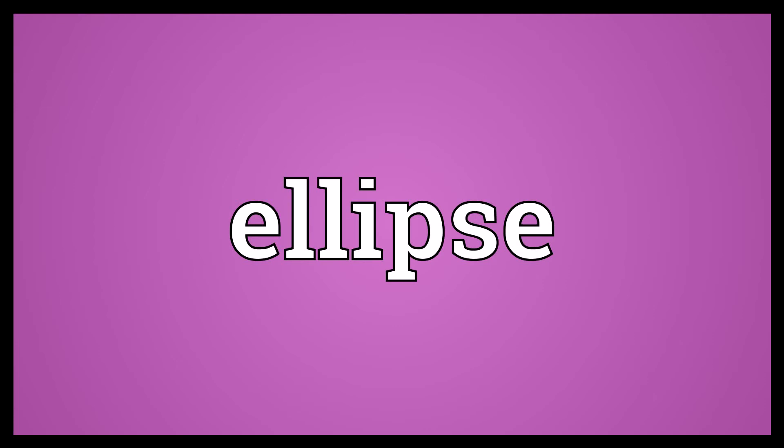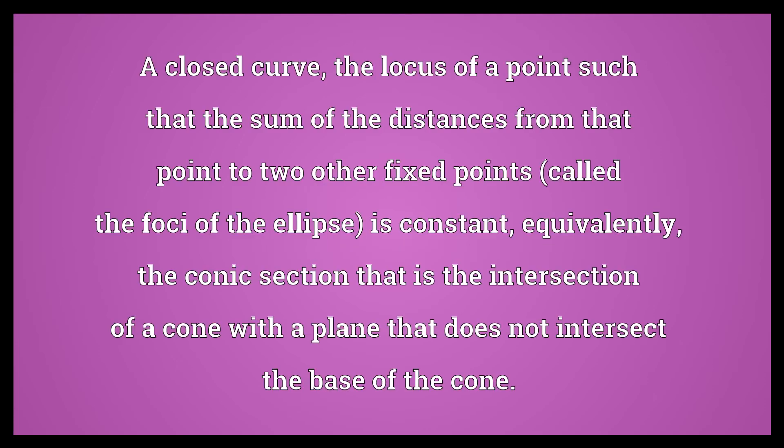Ellipse. A closed curve, the locus of a point such that the sum of the distances from that point to two other fixed points, called the foci of the ellipse, is constant. Equivalently, the conic section that is the intersection of a cone with a plane that does not intersect the base of the cone.